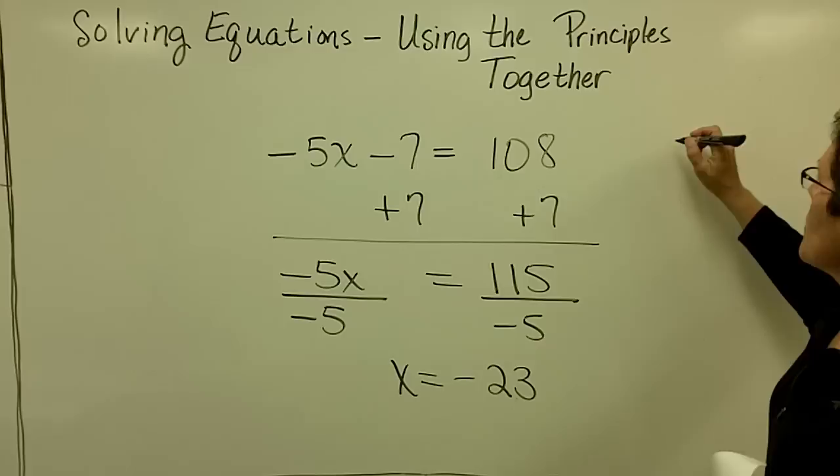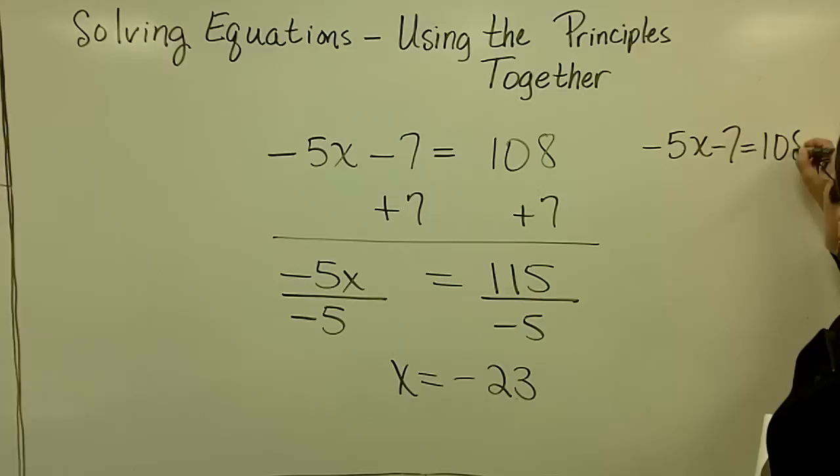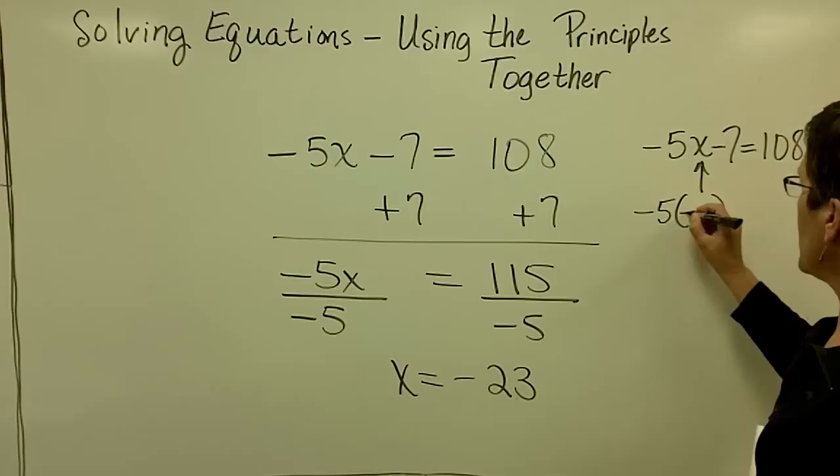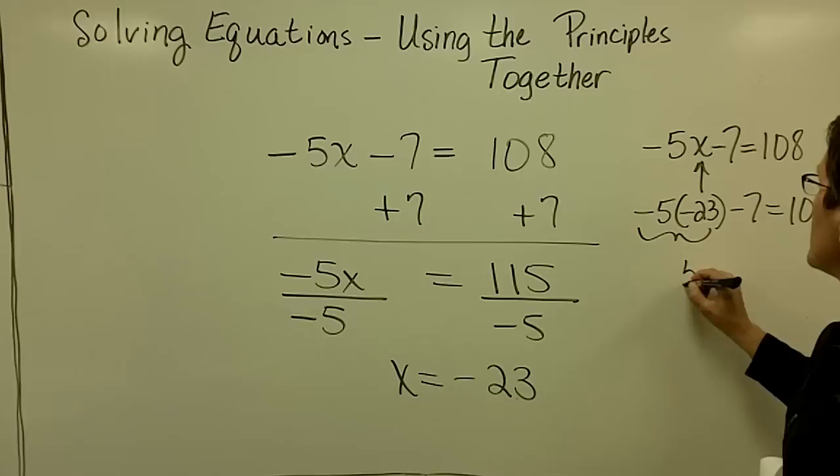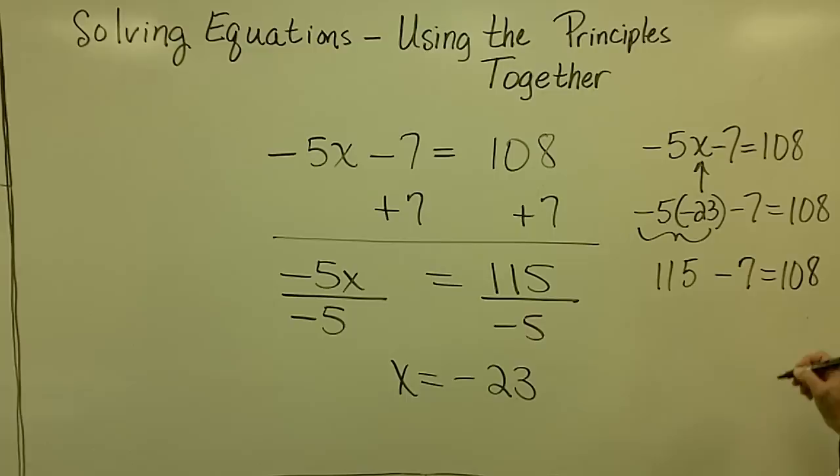I think I'll go ahead and check this one. So the original problem is a negative 5x minus 7 equals 108, and I wonder what a negative 5 times a negative 23 will be, and then I'm going to subtract 7 from that. A negative times a negative is a positive, and that would be 115. Then I'm going to subtract the 7, and I wonder if that equals 108. The left side is equal to 108. The right side is equal to 108, and I can check and see that I got that problem correct.